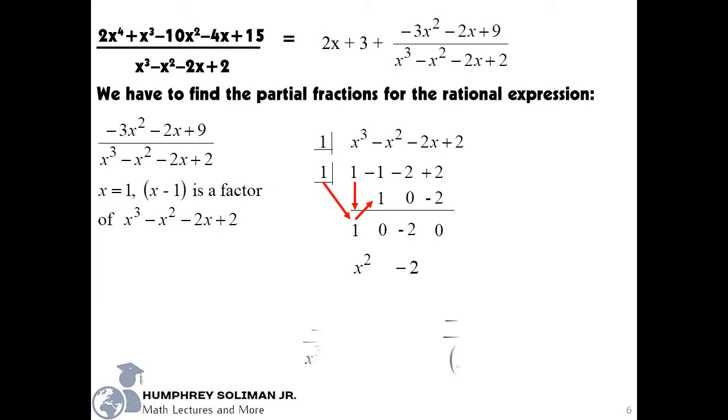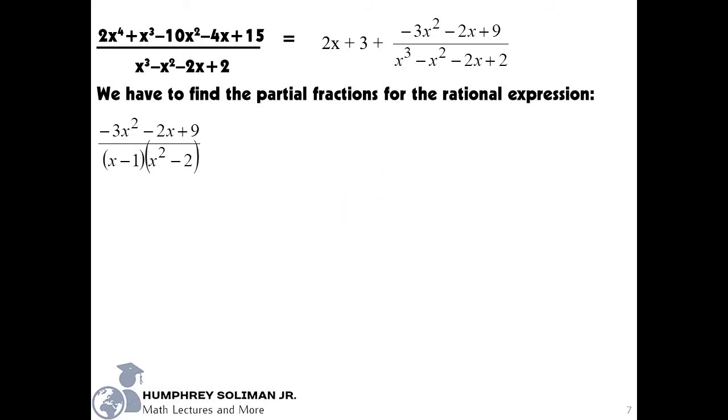So, our denominator in factored form will be the quantity x minus 1 times the quantity x squared minus 2. Now that we have written our denominator in factored form, we can write a partial fraction for each factor. Since x squared minus 2 is a quadratic factor, we need to write its numerator as a polynomial in the first degree. This rule will always apply to quadratic factors in partial fraction decomposition.